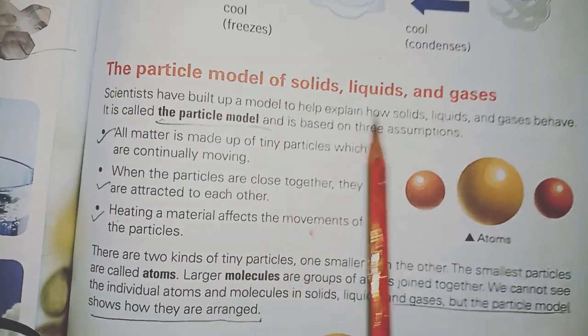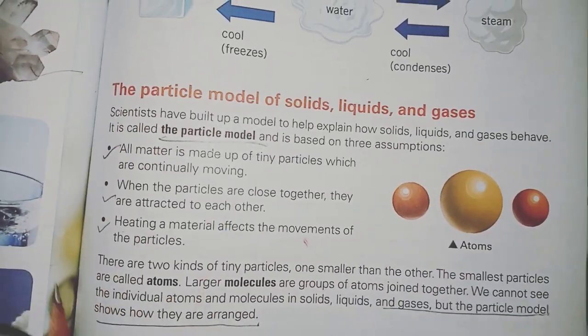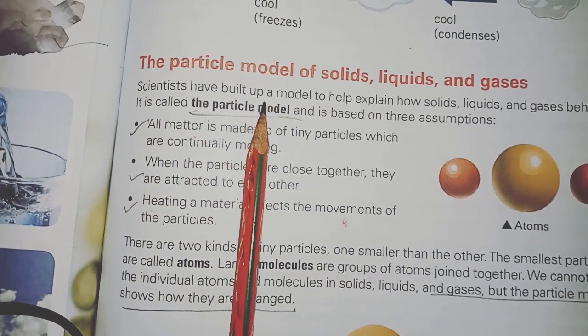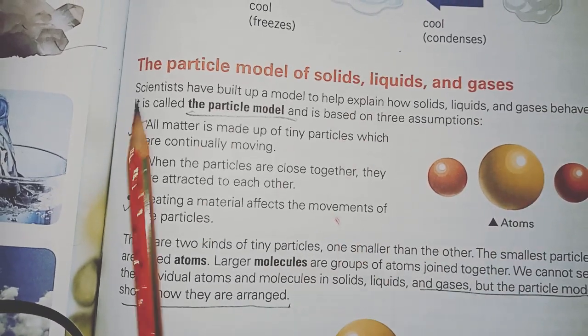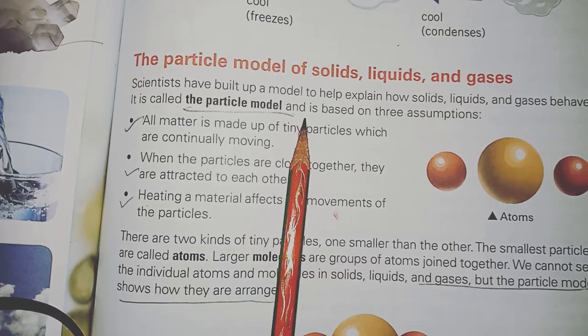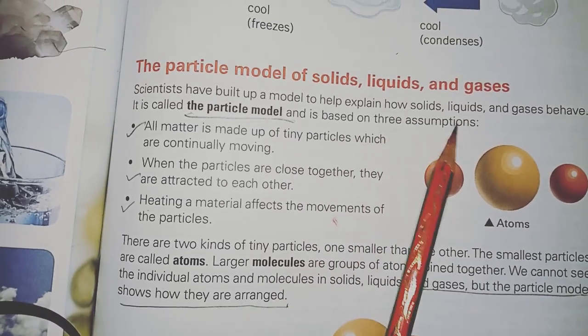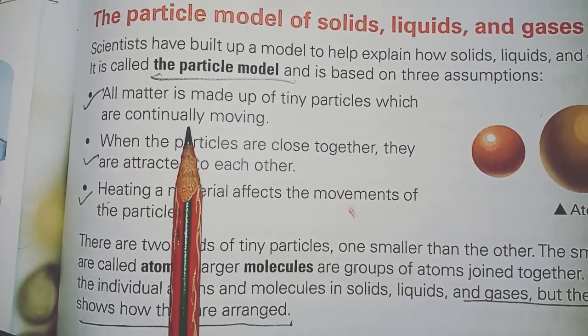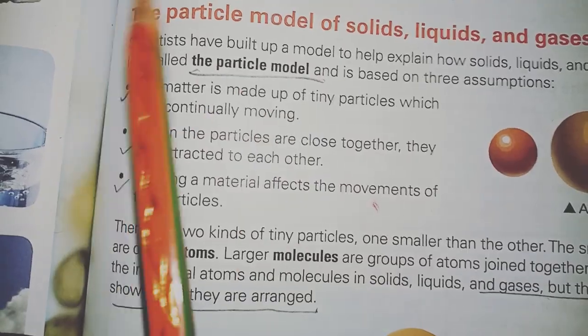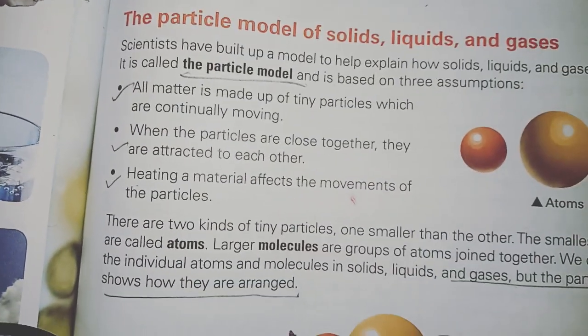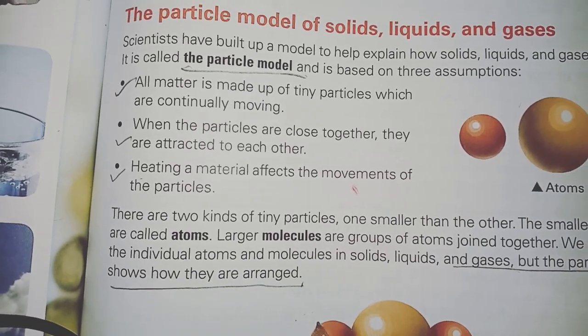Now comes the particle model of solids, liquids, and gases. What is the particle model? Scientists have built up a model to help explain how solids, liquids, and gases behave. It is called the particle model and is based on three assumptions. The first assumption is that all matter is made up of tiny particles which are continuously moving.